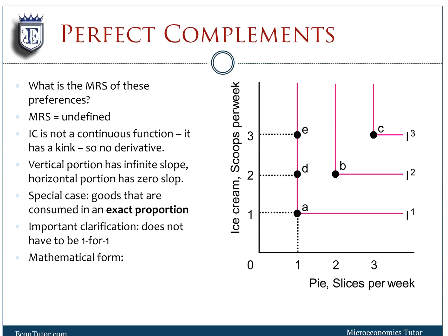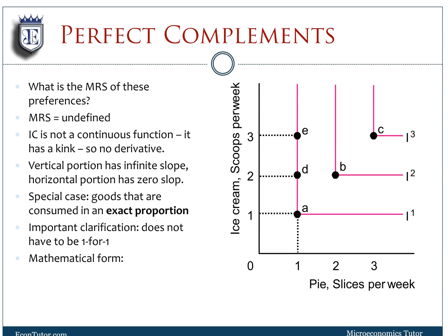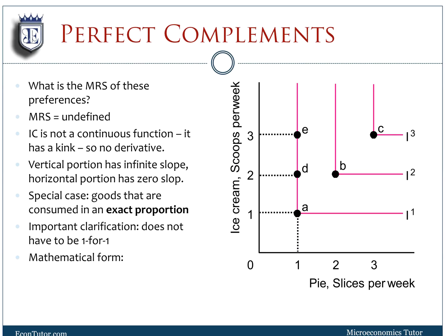Perfect complements are another special case — they produce L-shaped indifference curves because goods are consumed in a fixed proportion. The MRS is undefined here: in one region the slope is infinity, in the other it's zero. Since it's not a continuous function, we can't define the MRS.